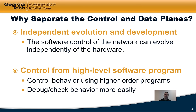The second reason to separate the control and data planes is that it allows the network to be controlled from a single high-level software program. Higher order programs could control the behavior of the entire network. In doing so, not only is it easier to reason about the behavior of the network, but it's also easier to debug and check this behavior.